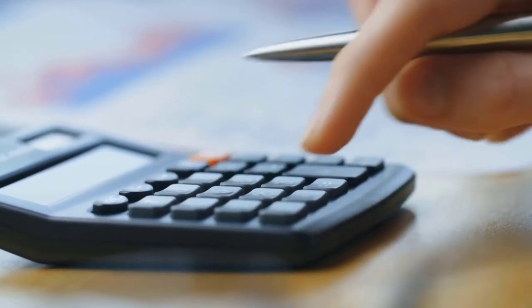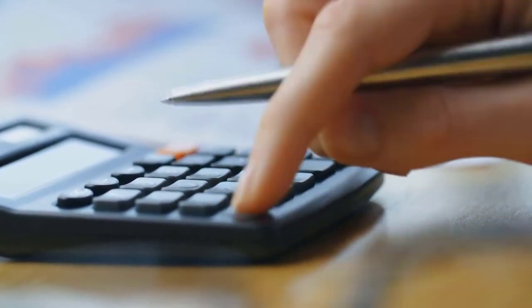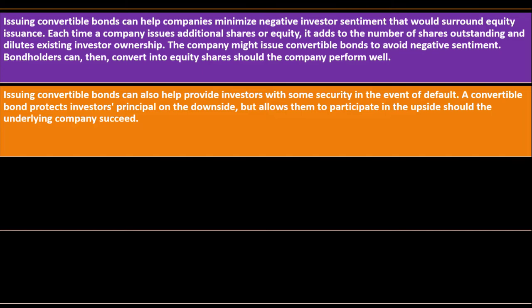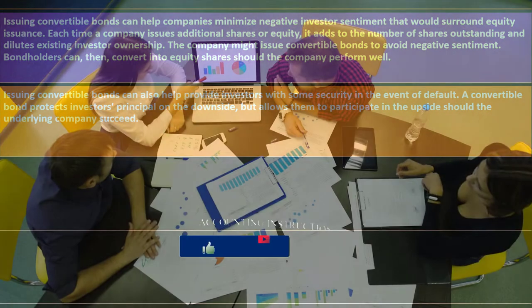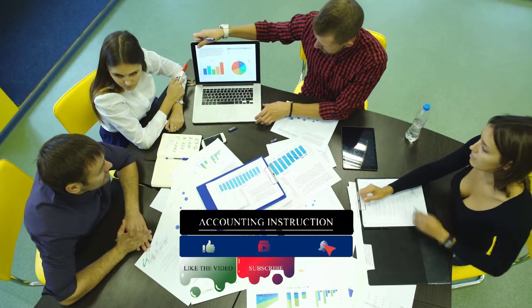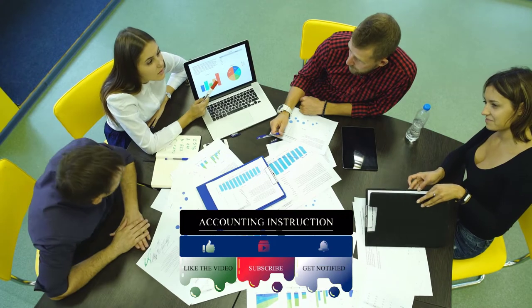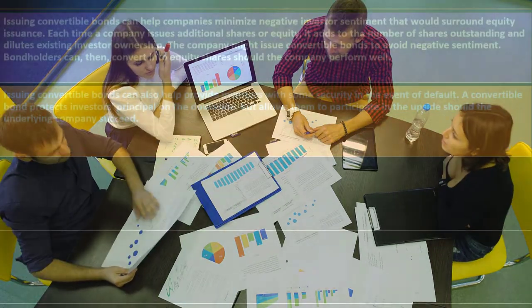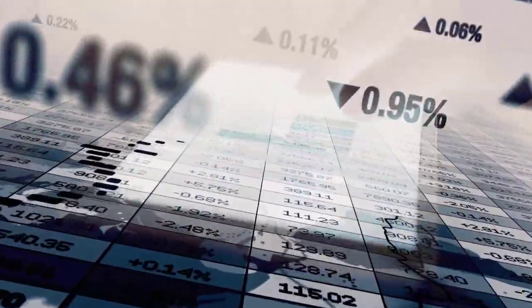The company might issue convertible bonds to avoid negative sentiment. Bond holders can then convert into equity shares should the company perform well, making it less of an issue to have more shares outstanding. Convertible bonds can also help provide investors with some security in the event of default. A convertible bond protects investors' principal on the downside but allows them to participate in the upside should the underlying company succeed. If you have the convertible bond, you've got that baseline — you should get the bond interest payments no matter what, even if the stock goes down, unless they went bankrupt. And if it goes up, you can convert and take advantage of the increased value.